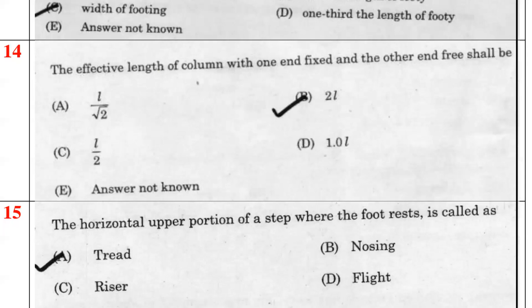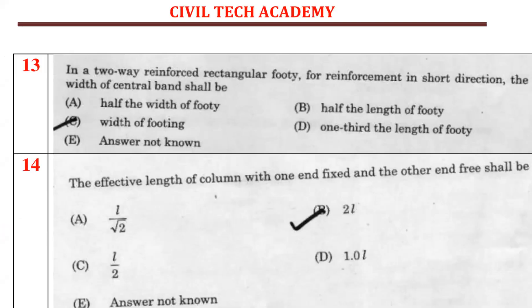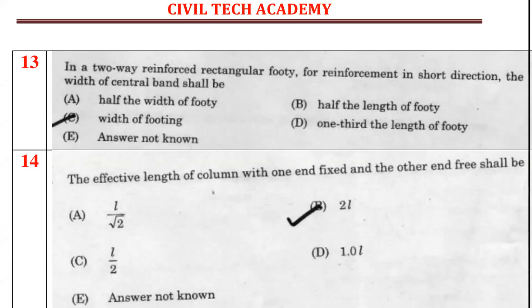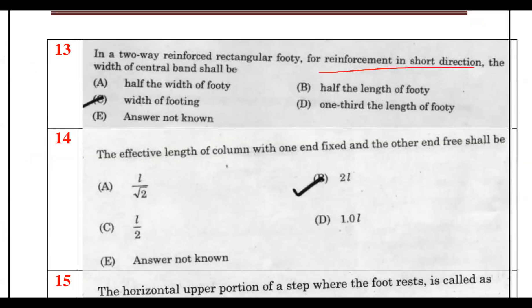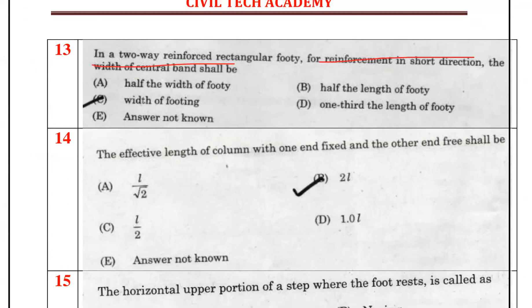For two-way reinforcement in a rectangular footing, the reinforcement in the shorter direction is placed in a central band whose width is the width of the shorter side of the footing.